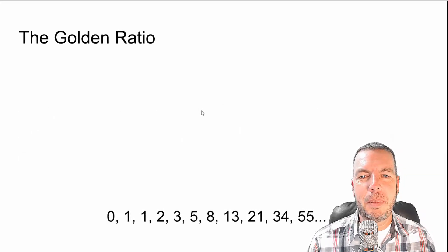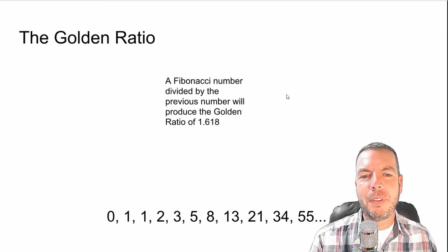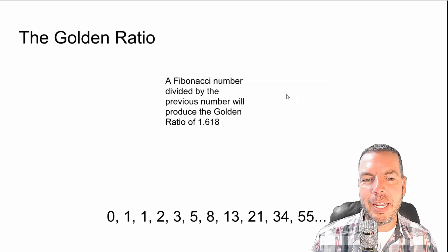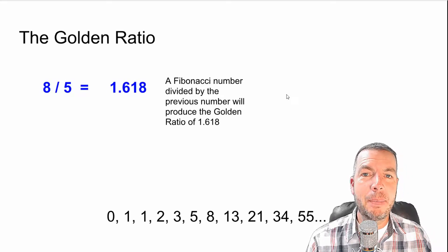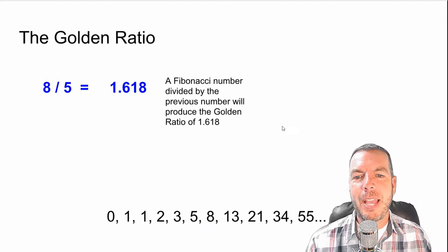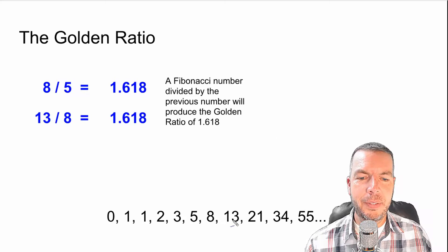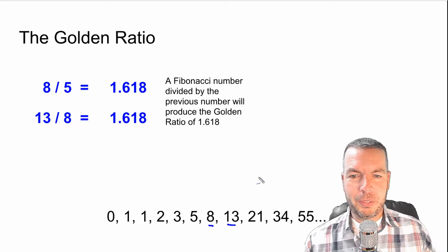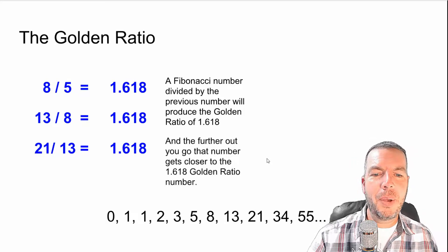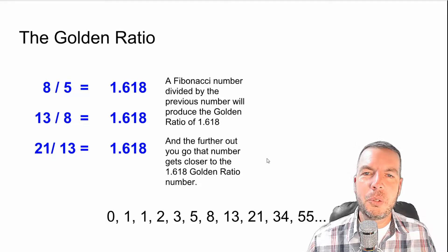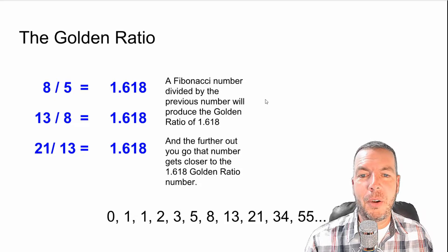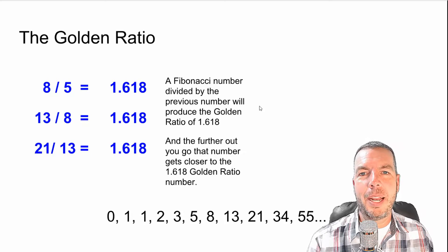Here's our Fibonacci sequence along the bottom. There's a thing called the golden ratio — a Fibonacci number divided by the previous number will produce the golden ratio of 1.618. So if we take eight and divide it by the previous number, five, that gives us 1.618. Same with 13 divided by eight — that's 1.618. And 21 divided by 13 — again 1.618. The farther you go out in this series, the closer it gets to exactly 1.618.